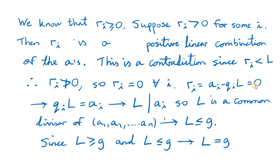So if we set ri equal to zero, we see that qi times l must equal ai, which means l must divide ai. If l is a common divisor of all the a's, it means l must be less than or equal to the greatest common divisor. We showed earlier that l is greater than or equal to g, and now we have shown that l is less than or equal to g. That means l must equal g.